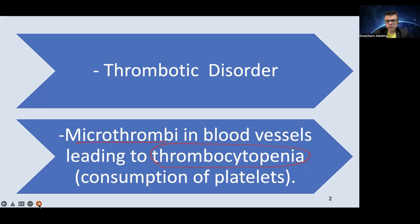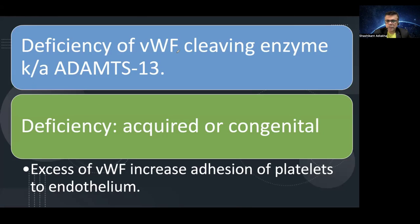These microthrombi consume a large number of platelets, which eventually gives rise to thrombocytopenia in the peripheral blood. The patient may have symptoms due to decreased platelet count and all those classical clinical manifestations. The deficiency of one key enzyme — the von Willebrand factor-cleaving enzyme ADAMTS13 — is the pathognomonic event that gives rise to this entire process.